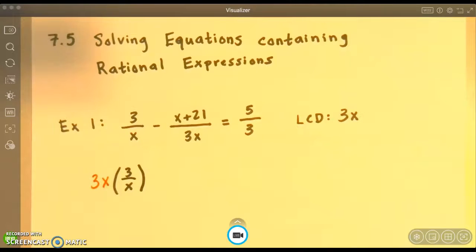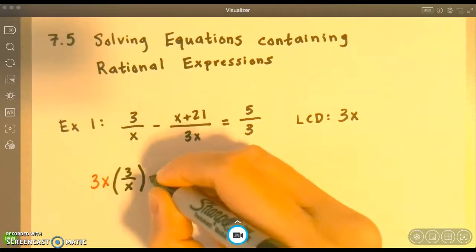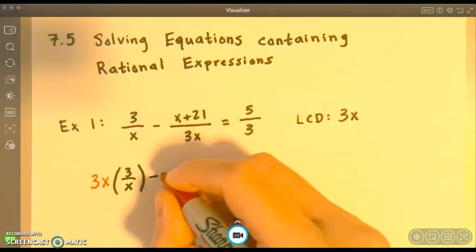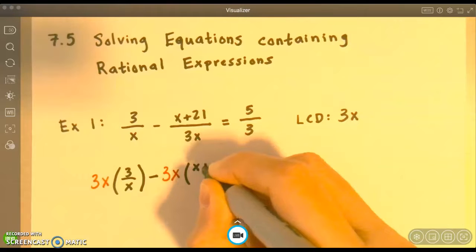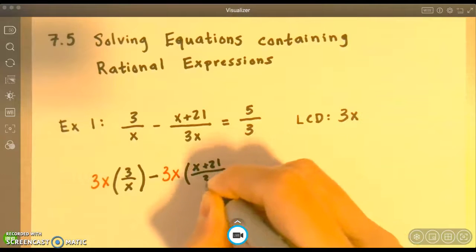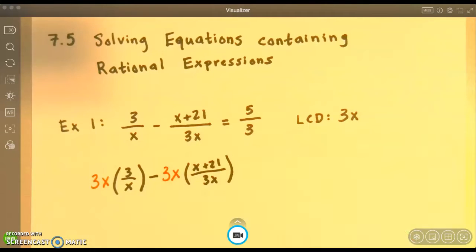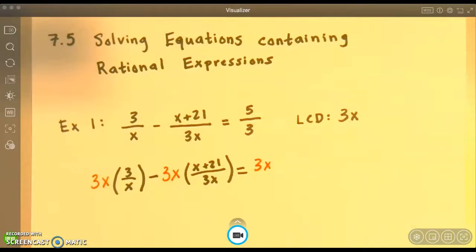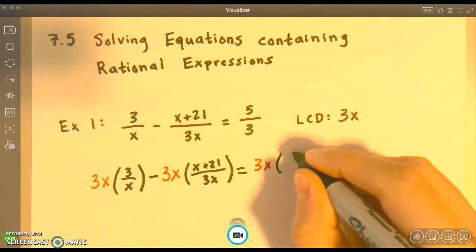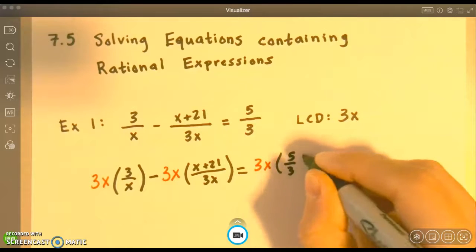Then I have minus, and I'm going to multiply 3x again, that's my LCD, times (x+21)/3x. Then I have equals, and I'm going to multiply 3x times that third fraction, 5/3.